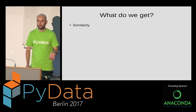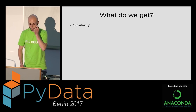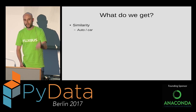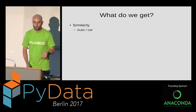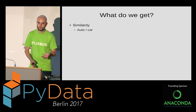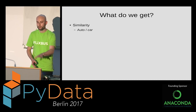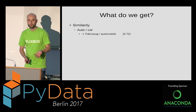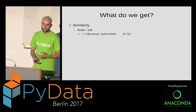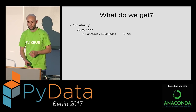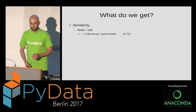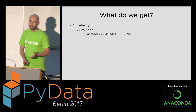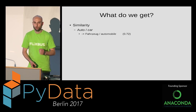I first checked if the network picked up something meaningful or just produced garbage. I asked: what is the most similar word to 'car'? The network responds: 'automobile.' That makes sense — car and automobile are very related. The cosine similarity ranges from minus one to one, where one is perfect similarity.